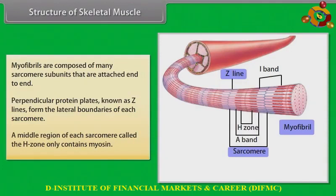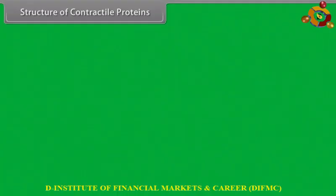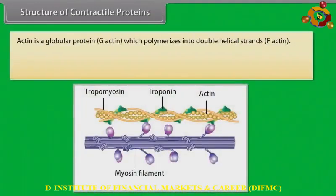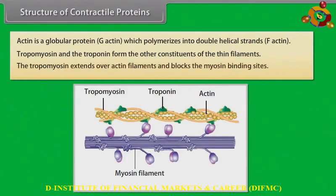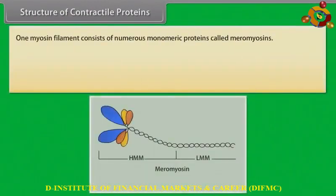Perpendicular protein plates known as Z-lines form the lateral boundaries of each sarcomere. A middle region of each sarcomere called the H-zone only contains myosin. Structure of contractile proteins: actin is a globular protein, G-actin, which polymerizes into double helical strands, F-actin. Tropomyosin and troponin form the other constituents of the thin filaments. The tropomyosin extends over actin filaments and blocks the myosin binding sites.